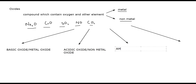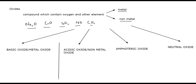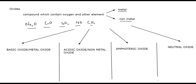Some oxides are known as amphoteric oxides, and the last one is known as neutral oxide. So oxide means a compound which contains oxygen and another element, and these oxides are divided into four categories: basic oxide or metal oxide, acidic oxide or non-metal oxide, amphoteric oxide, and neutral oxide.